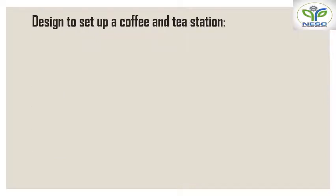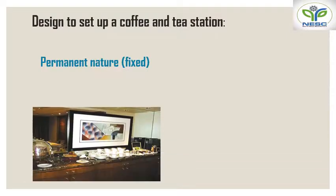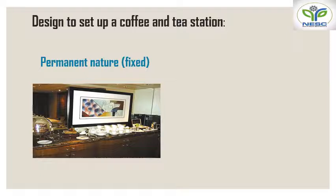Now, the design to set up a coffee and tea station. The first design type is permanent or fixed — the fixture is already fixed in one particular place. As you can see in the image, this type of fixture is found in a coffee shop.